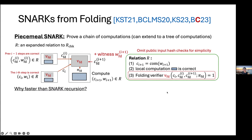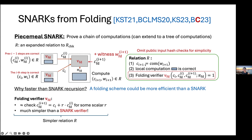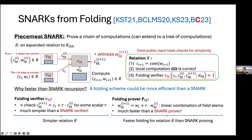Why is this much faster than SNARK recursion? The folding scheme is usually much simpler than a SNARK. The folding verifier just involves linear combinations of small commitments — much simpler than a SNARK verifier. The corresponding folding statements are much simpler than recursive SNARK statements. Moreover, at each step the folding prover just does a linear combination over a witness vector, which is far faster than the SNARK prover algorithm.